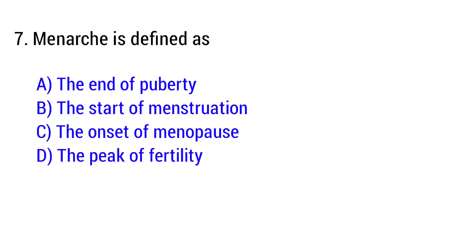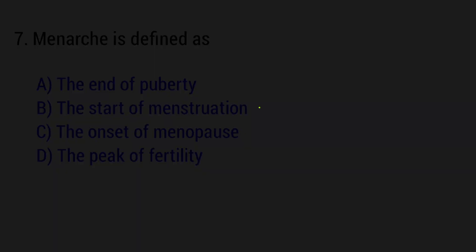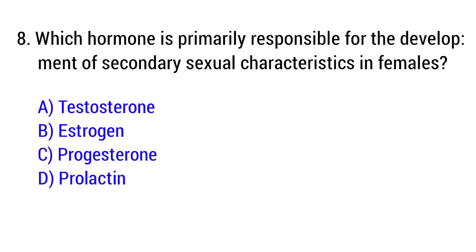Question number 7: Menarche is defined as — the right answer is Option B: The start of menstruation. Question number 8: Which hormone is primarily responsible for the development of secondary sexual characteristics in females? The right answer is Option B: Estrogen.